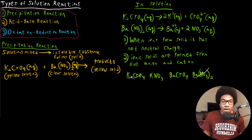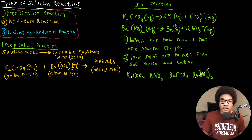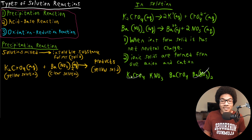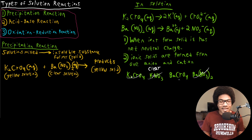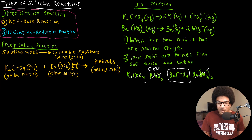We've narrowed it down to potassium nitrate and barium chromate. One thing we know about potassium nitrate is that it's a clear solution, so if it were to form a solid it would form a white solid — so this is also eliminated. That means that our actual yellow solid must be barium chromate.